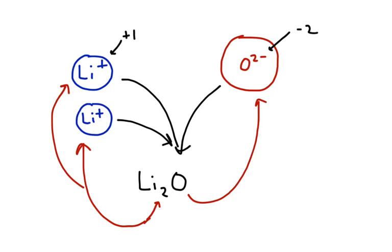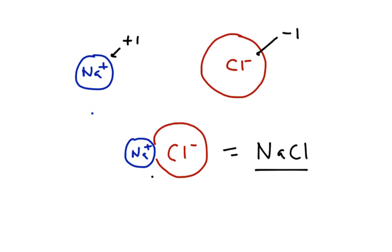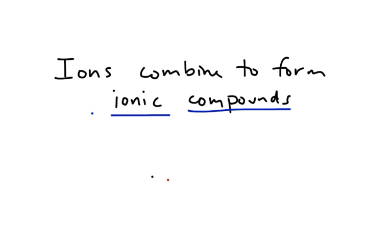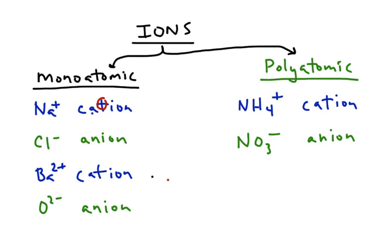So that's a basic overview, and remember the key things here. Ions combine to form ionic compounds that are neutral. We can classify ions as monoatomic, polyatomic, and then within those, they could be either cations or anions. Hope this helps.